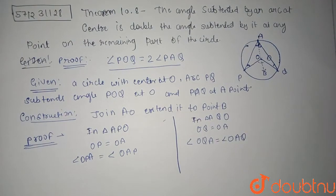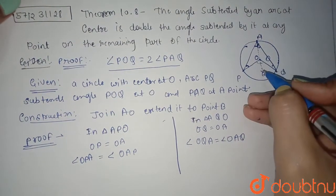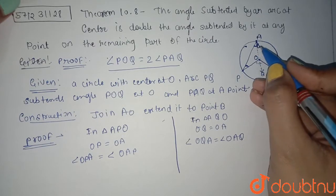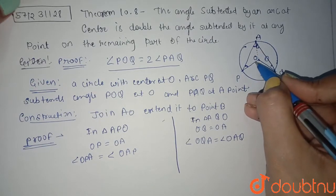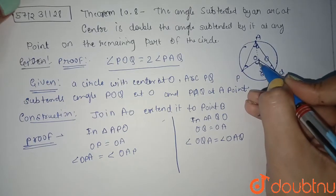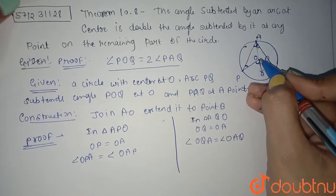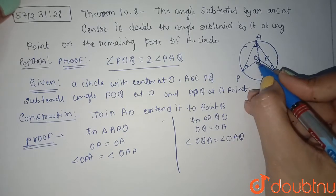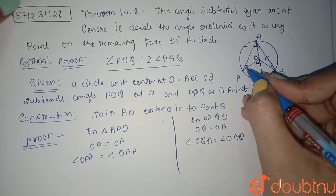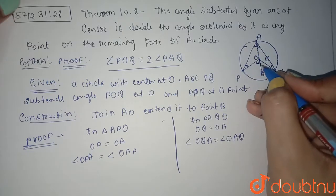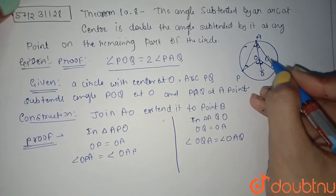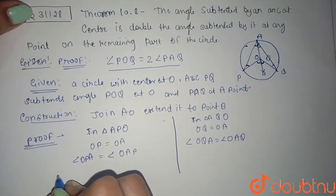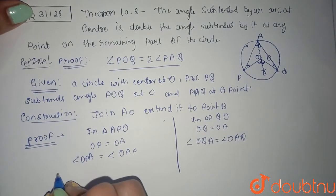Now what we want is the relation between these two angles. This line we have extended - this angle is an exterior angle of this triangle and this angle is the exterior angle of this triangle. So from the exterior angle property...